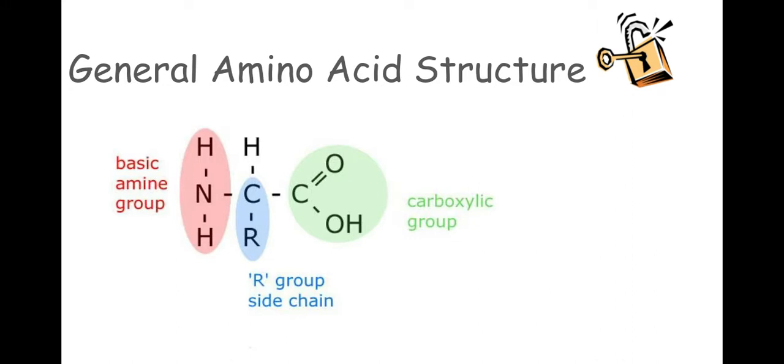Now one thing to note here is this R group. An R group is a side chain of the amino acid. Now there are 20 amino acids in total. You don't need to know the structure of all 20 amino acids but what you do need to know is that this R group changes between the different amino acids.